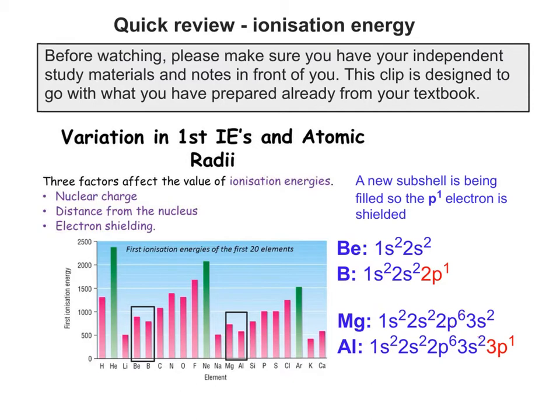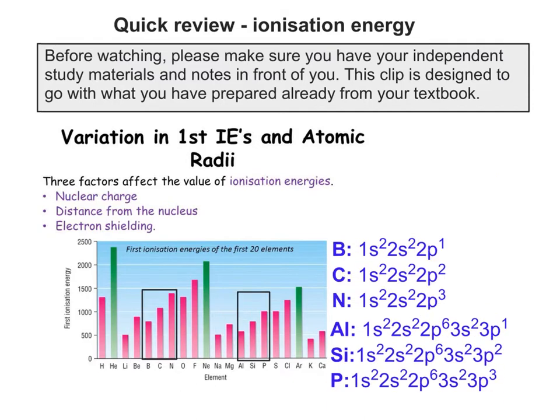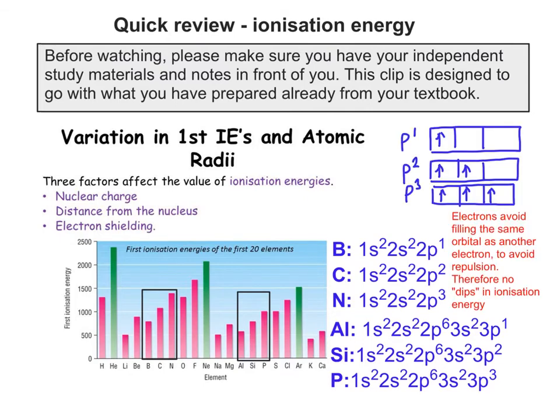Looking at some more trends as we move across: in this case you get a nice steady increase with no dips. Moving from p1 to p2 to p3, the electrons go into separate orbitals to avoid repulsion. Therefore this allows the effect of the increasing proton number to raise the ionisation energy steadily.